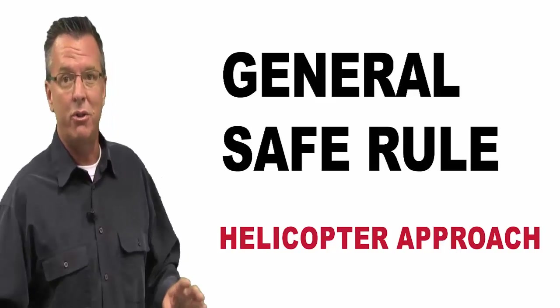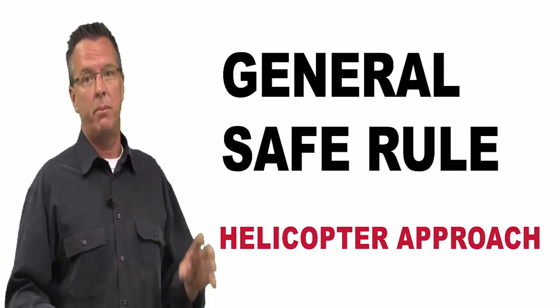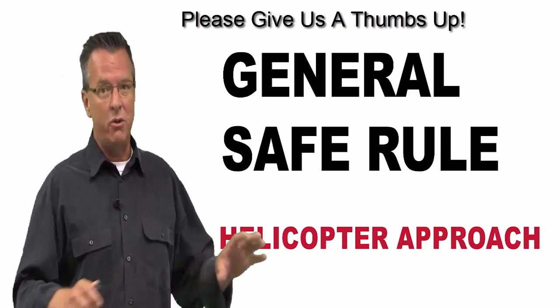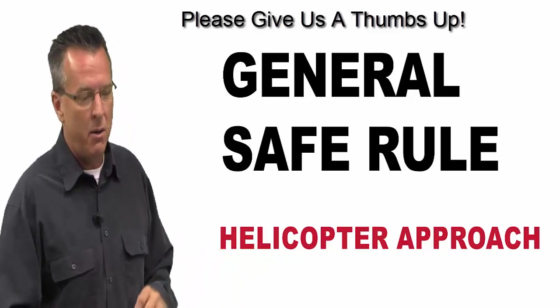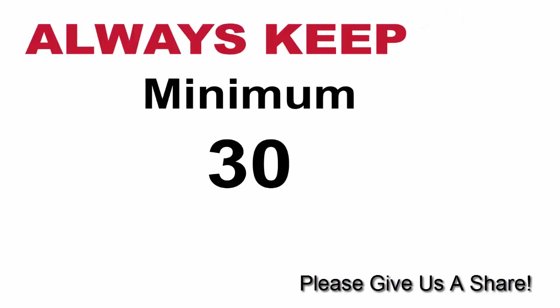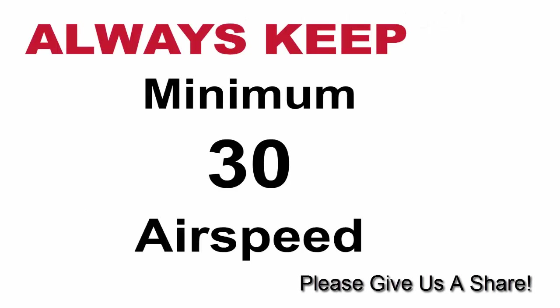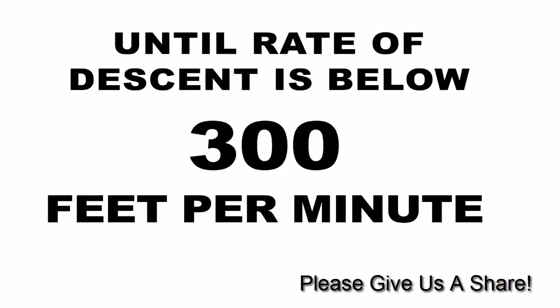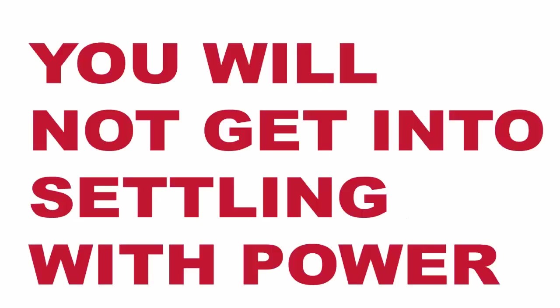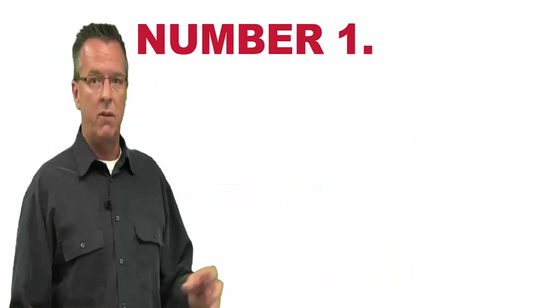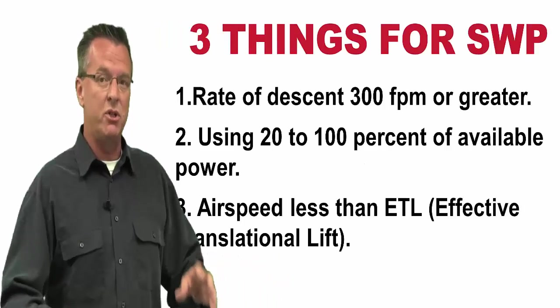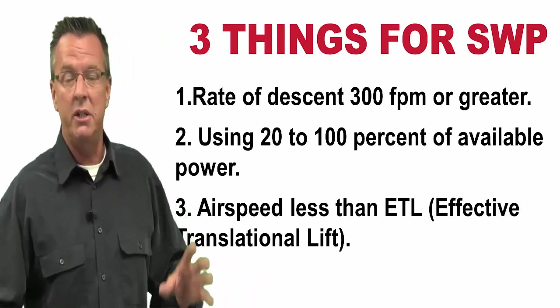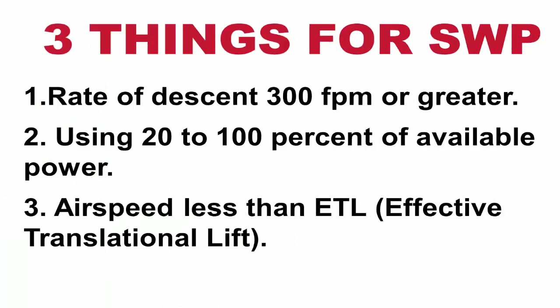Today I want to cover the general safe rule for flying your helicopter approach. This is a general rule — it's not anything in a reg anywhere, and it's kind of conservative, but that's okay. In order to keep yourself out of settling with power, always keep a minimum of 30 knots on your airspeed until your rate of descent is below 300 feet per minute. If you follow this, you will not get into settling with power — it just plain won't happen. If you have all three of these flight situations together, this can cause you to get into settling with power. Take away any one of those three and you're not in it.